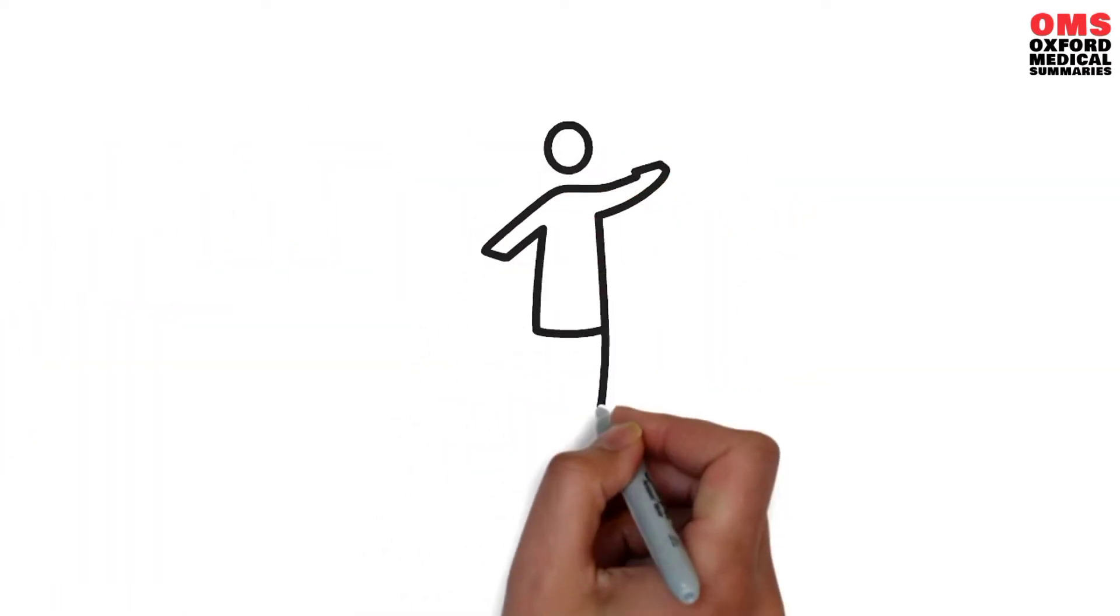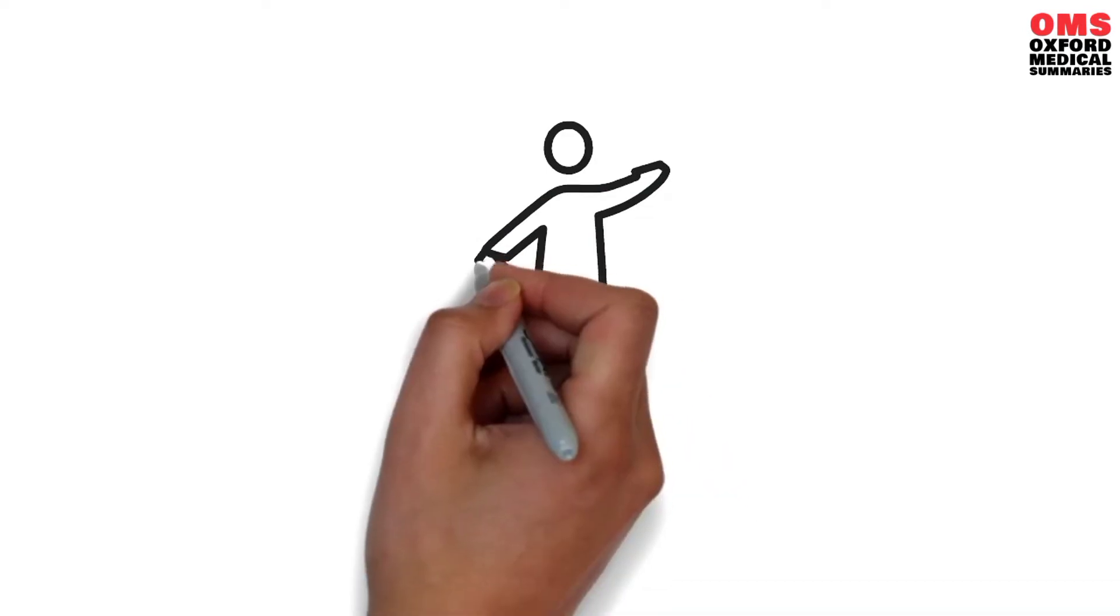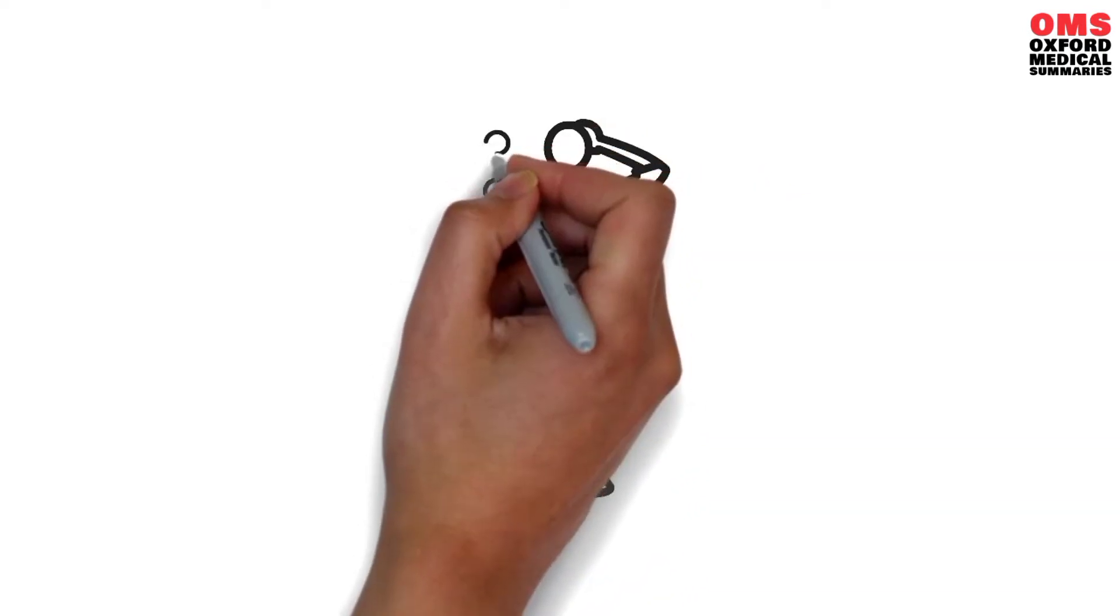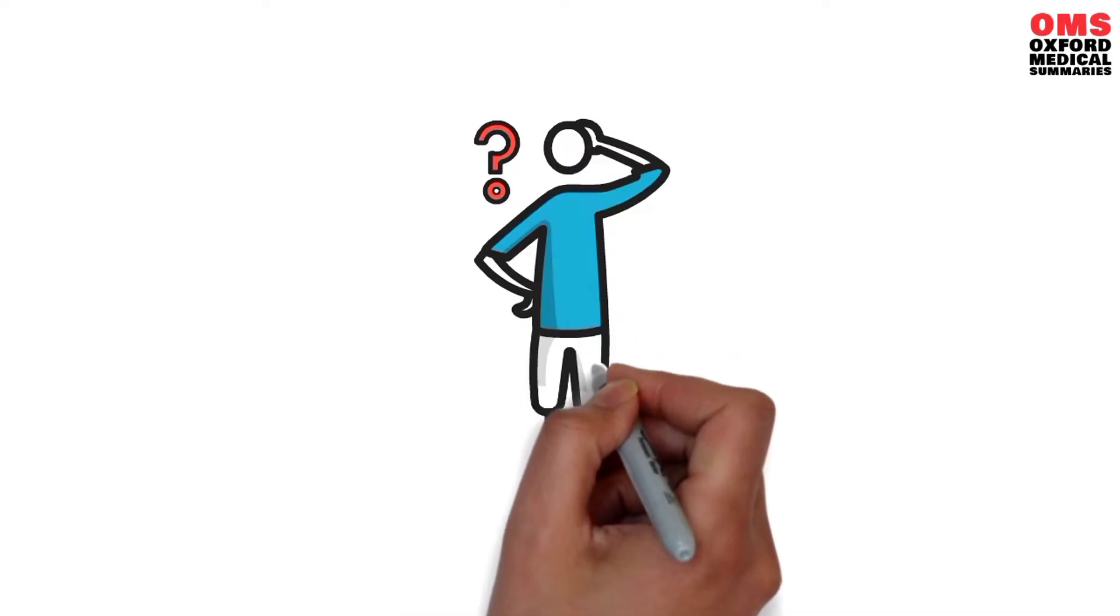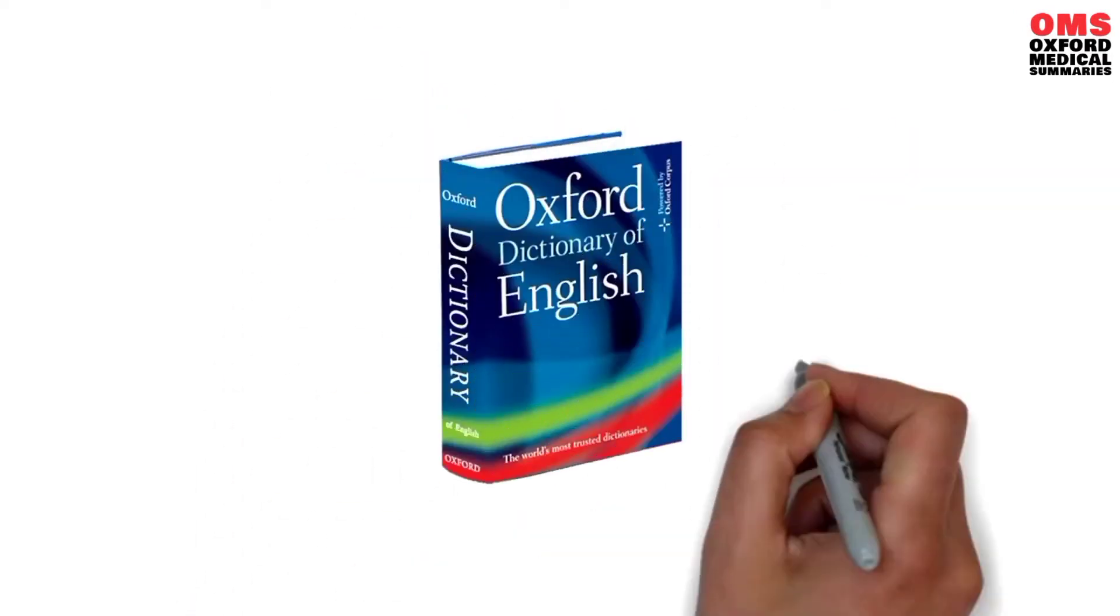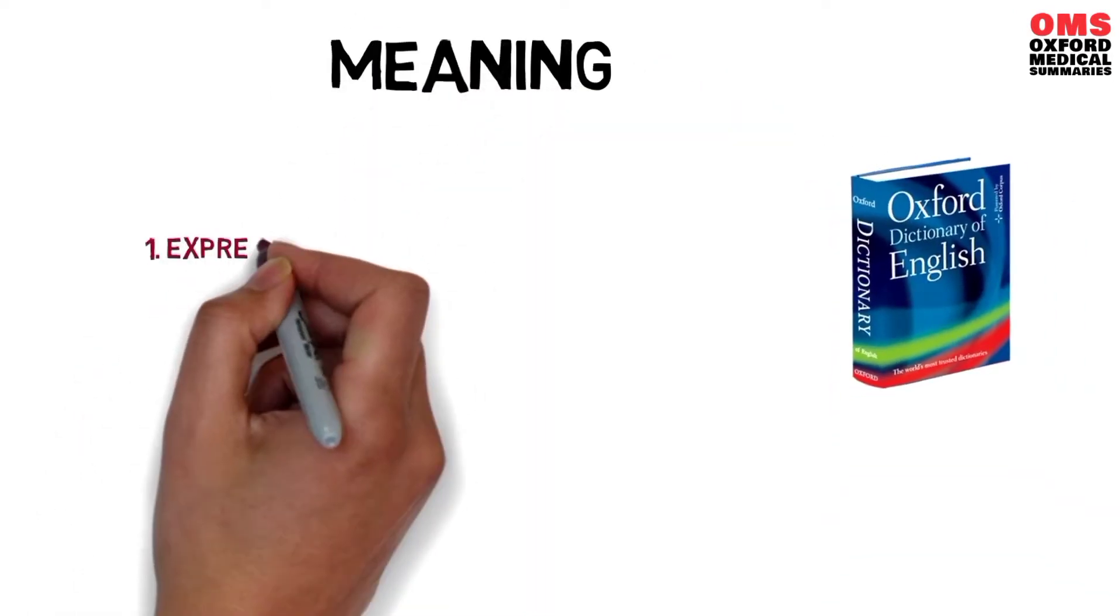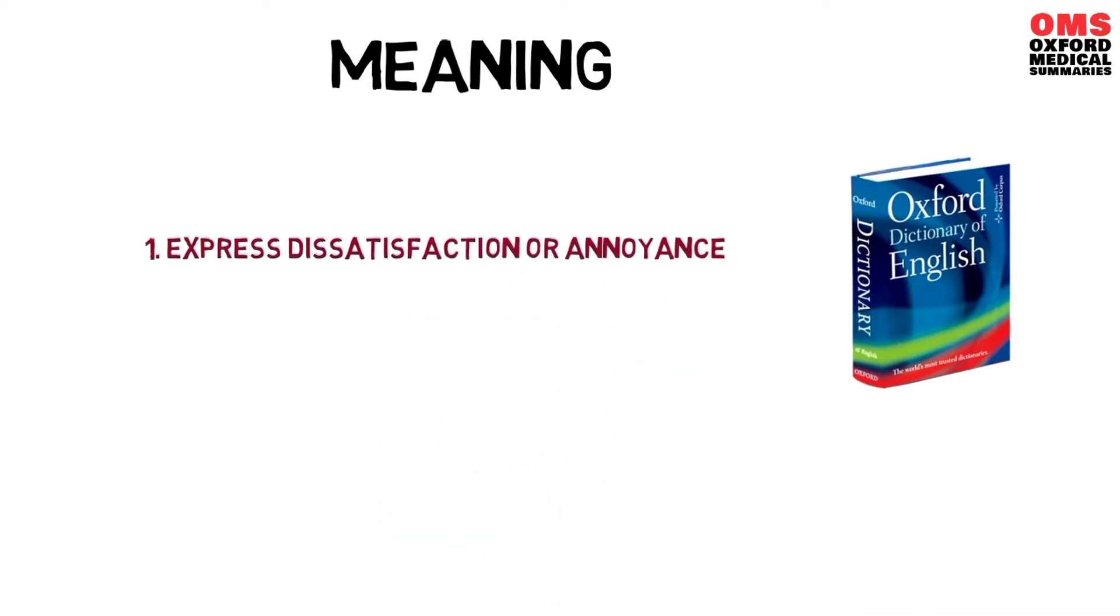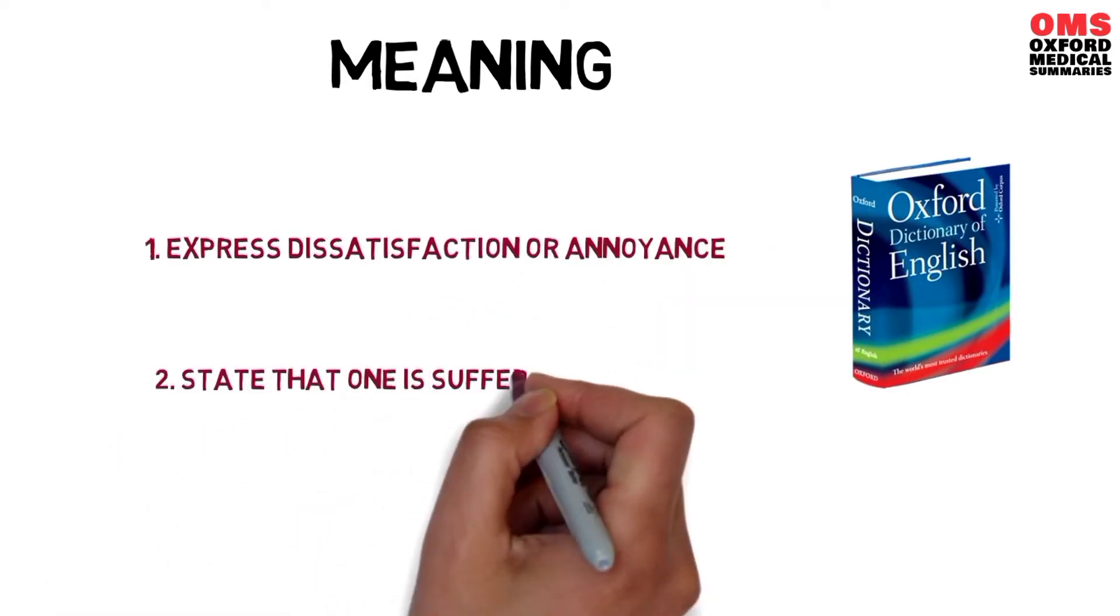Now before we begin, it's very important to define what is meant by a complaint. The Oxford English Dictionary defines the verb complain as: 1. Express dissatisfaction or annoyance. 2. State that one is suffering from something.